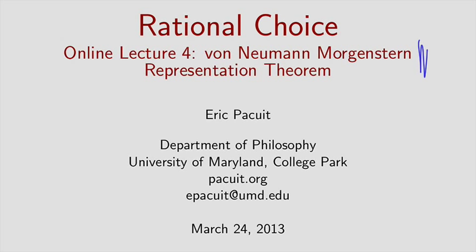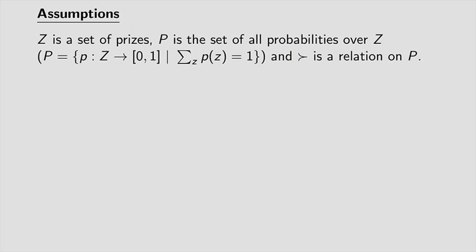So the assumptions is that Z is going to be a set of prizes and for the purposes of these lectures, even though I don't have it written down right here, it's important that Z actually is finite. So Z is a finite set of prizes. The theorem generalizes when Z is an infinite set of prizes, but there's lots of mathematical issues that arise. In general I'm going to try to not spend too much time talking about those because those require some background in mathematics to really appreciate what's actually going on. So we have a finite set here of prizes.